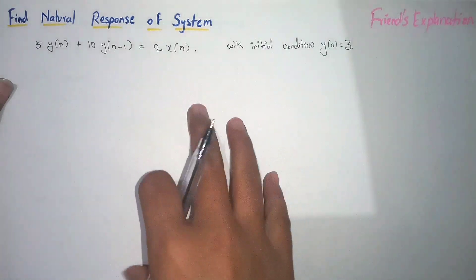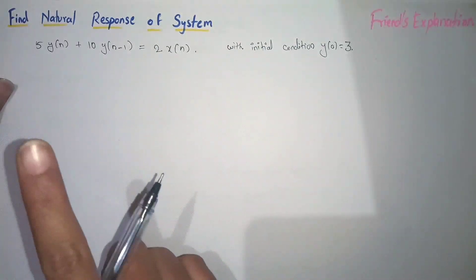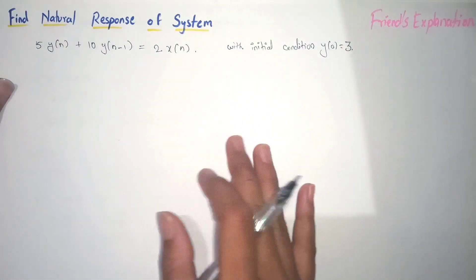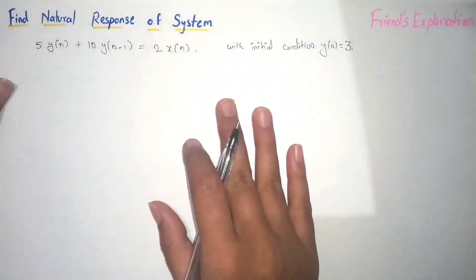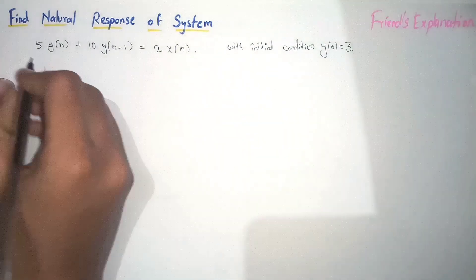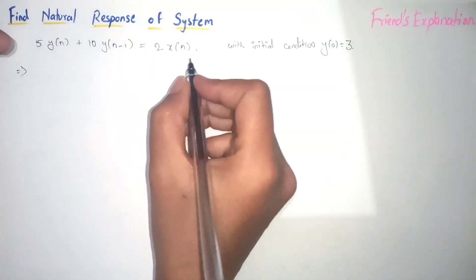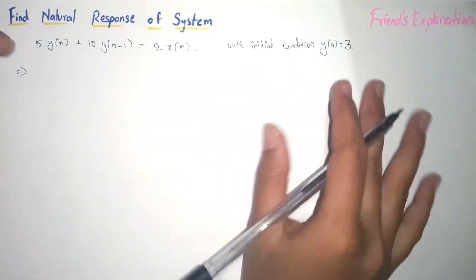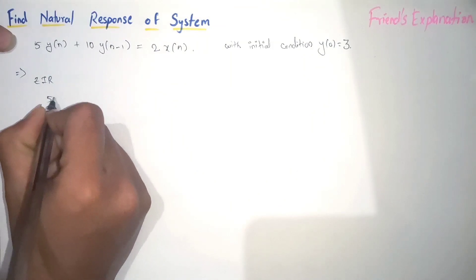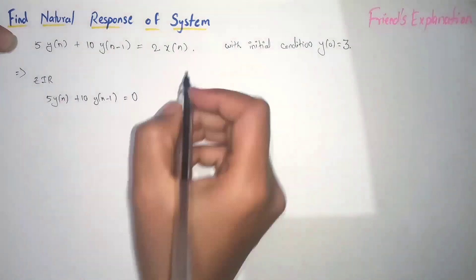This is a very short video, so if you watch the previous videos first, this problem will be really easy. Even if you already know the concept, you can continue. So let's start solving this equation. To find the natural response, the initial conditions should be considered and the input should be equal to zero. For the zero input response, input equals zero, and we label the resulting equation as equation 1 and equation 2.